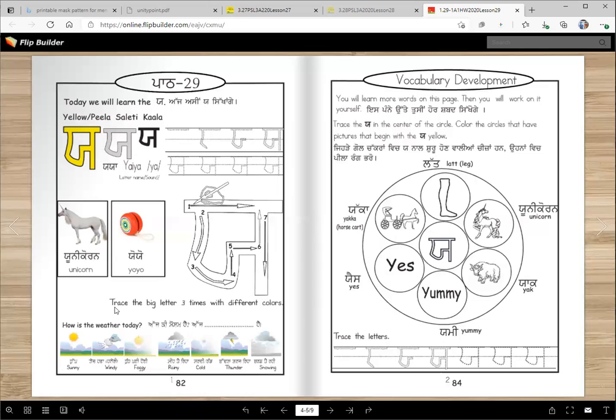Okay, trace the big letter three times with three different colors. You will do that after we finish the lesson. How is the weather today? Let's see what it is. Where I am, I am in San Jose, California.